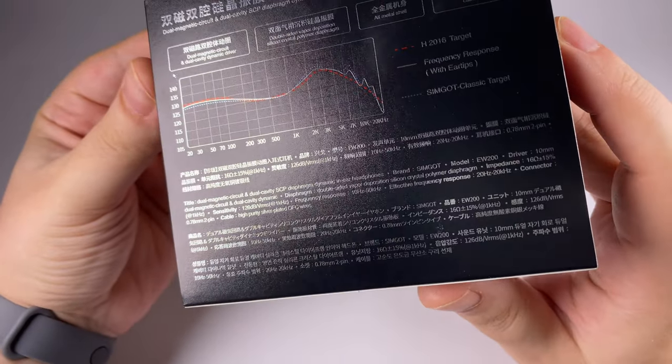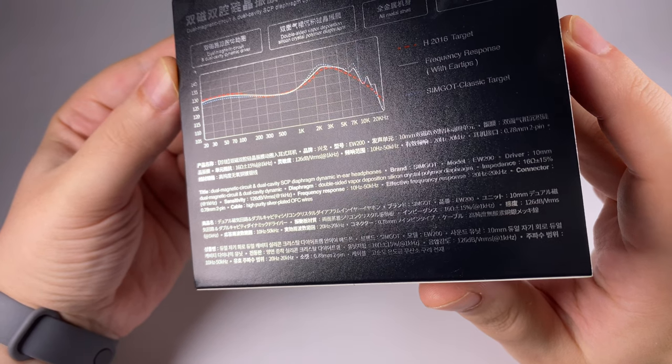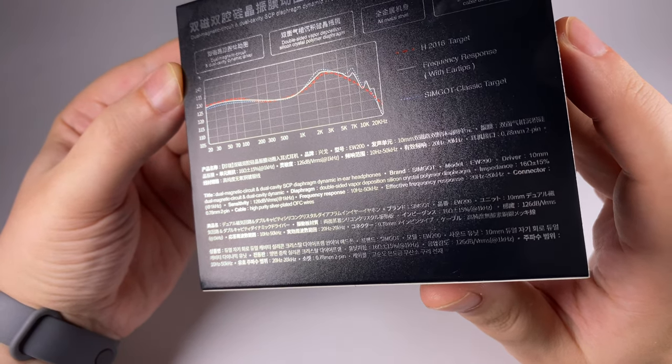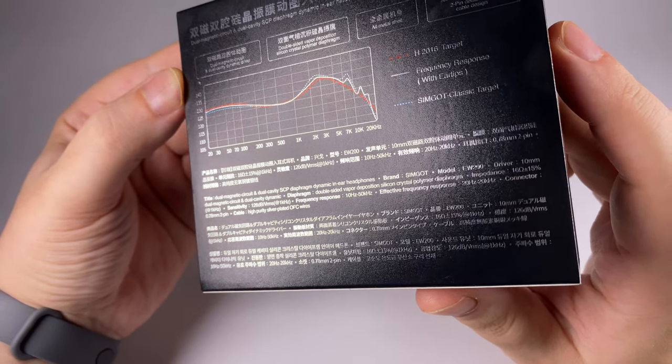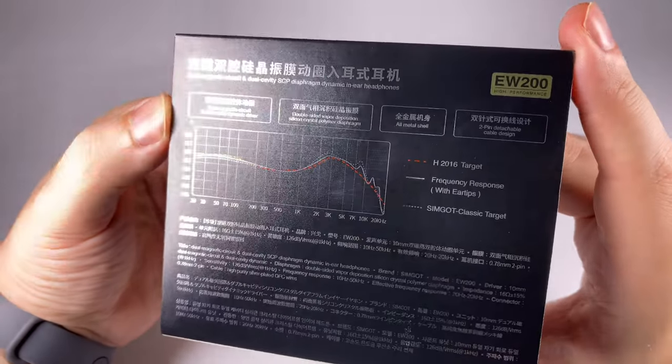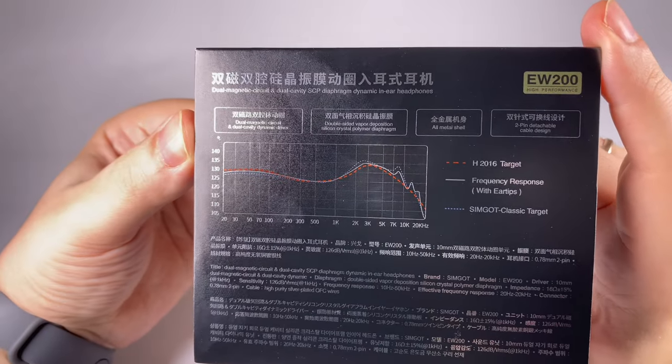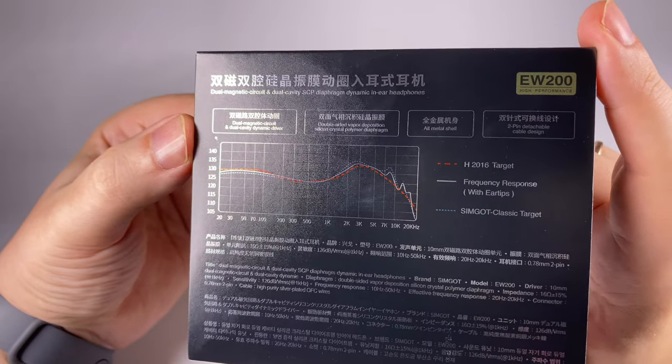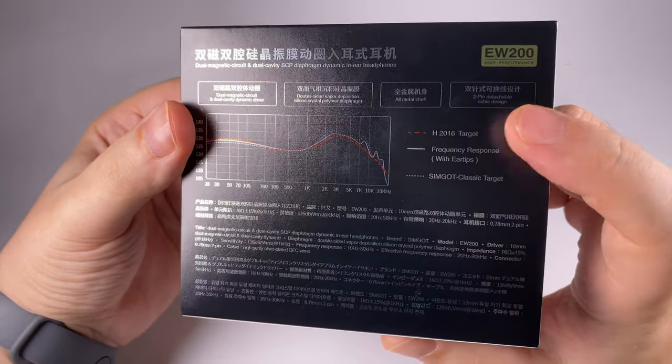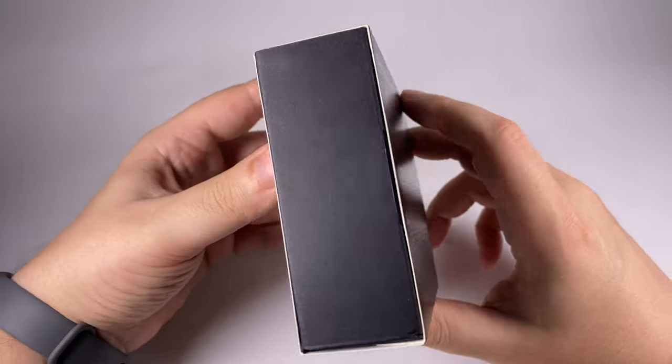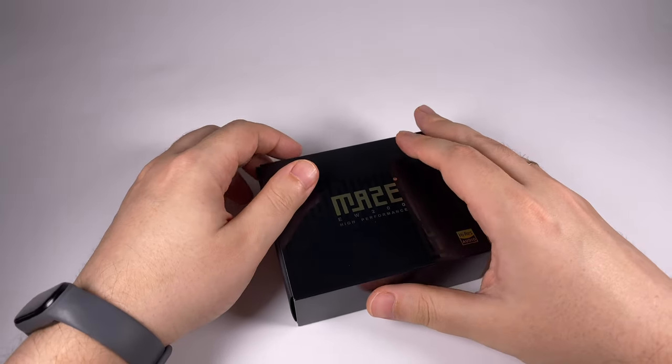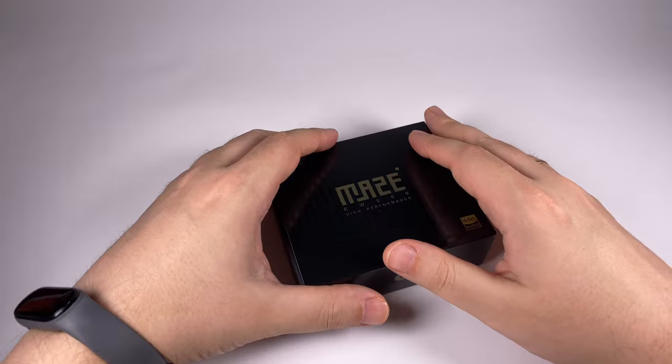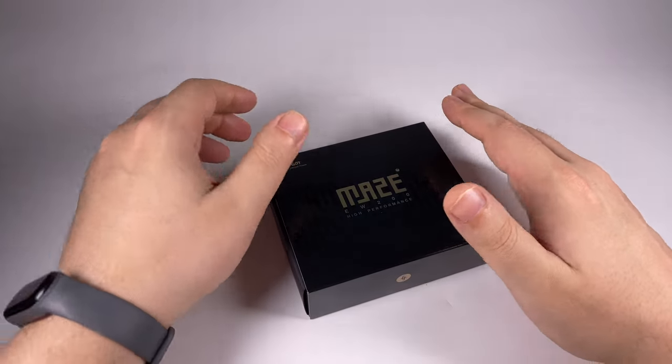Here on the box: dual magnetic circuit and dual cavity SCP diaphragm dynamic in-ear headphones. And also here you can see frequency response chart that is pretty close to that famous HR 2016 target.